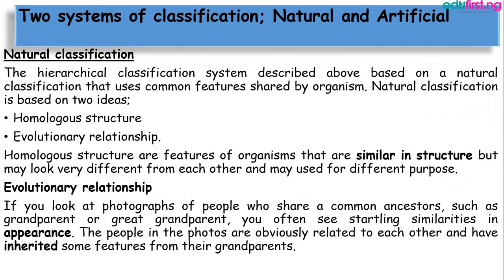Next, we look at the two systems of classification: natural and artificial. Natural classification is further divided into two subdivisions: homologous structures and evolutionary relationships. Homologous structures are features of organisms that are similar in structure but may look very different from each other and may be used for different purposes. Evolutionary relationships refer to organisms that share a common ancestor — just as people who share grandparents or great-grandparents often show similarities in appearance, having inherited features from those common ancestors.